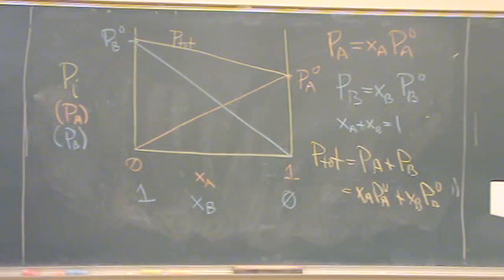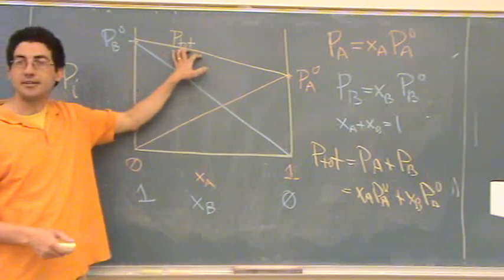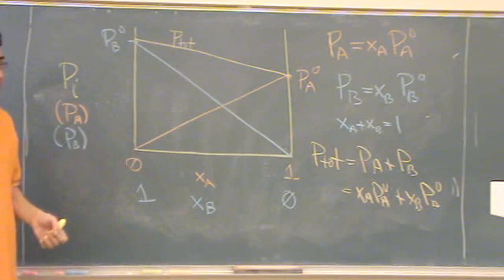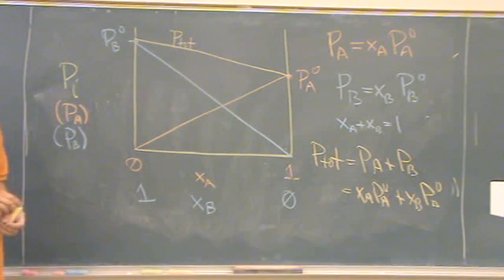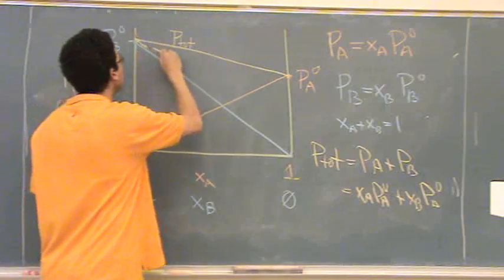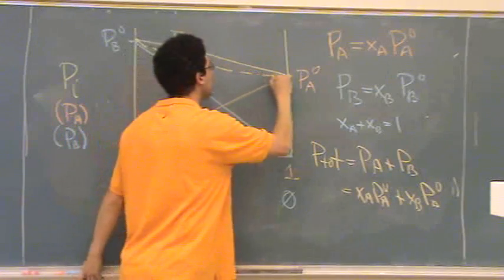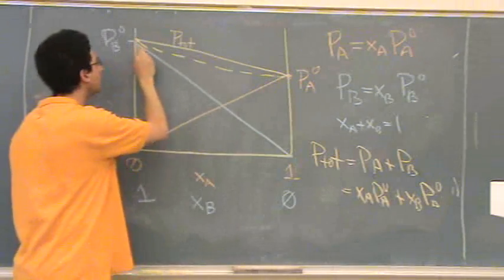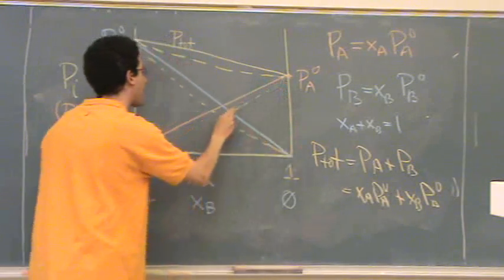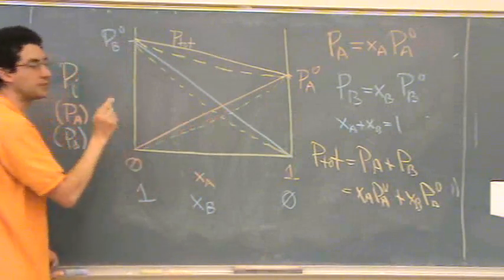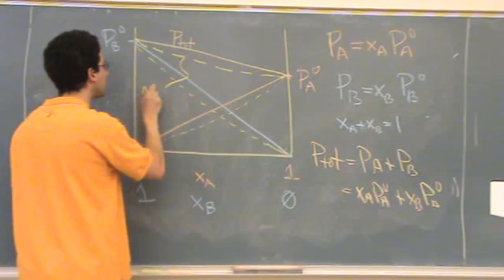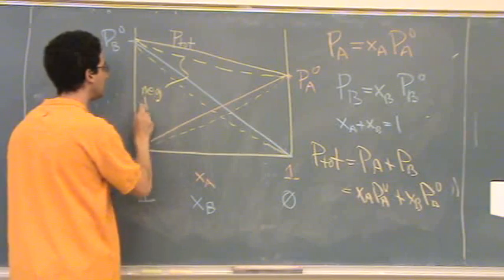Okay? So what happens is, this is called an ideal. If it follows this, it's an ideal solution. Okay? Not everything will follow this ideal solution. So sometimes, there'll be negative deviation, meaning it follows below the expected line. It just hangs a little low. So we call this negative deviation.